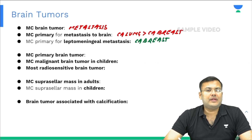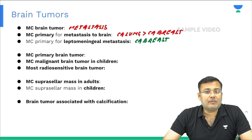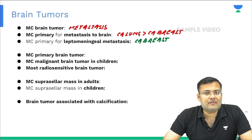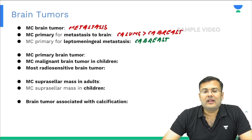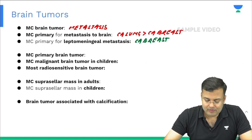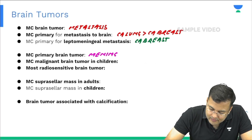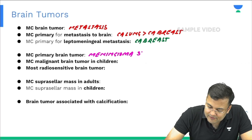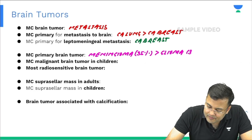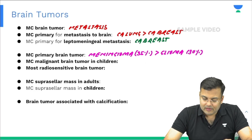For primary brain tumors: the most common primary brain tumor is meningioma, in 35% of cases, followed by glioma or glial tumor in 30% of cases.